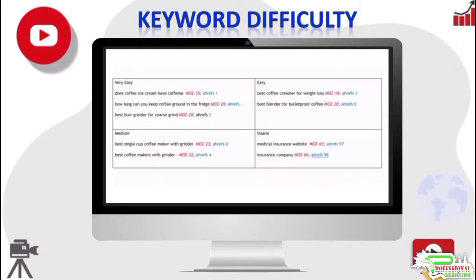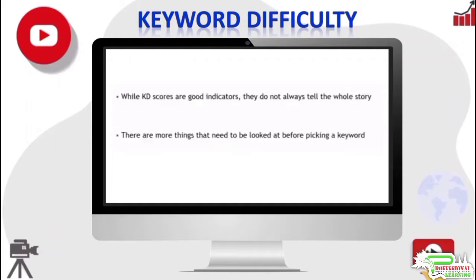A relatively high keyword difficulty score may not always mean a keyword is hard to rank, and a relatively low KD score may not always mean a keyword is very easy to rank. While keyword difficulty scores are very good indicators that can help you pick keywords to target, they do not always tell the whole story — there are additional things that need to be looked at before we can decide whether a keyword is really easy to rank or not.